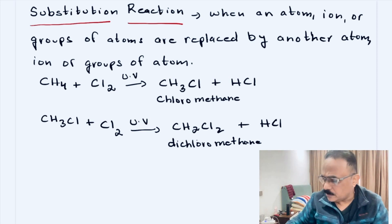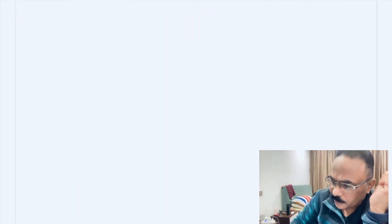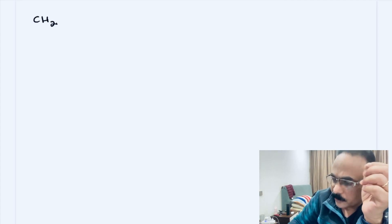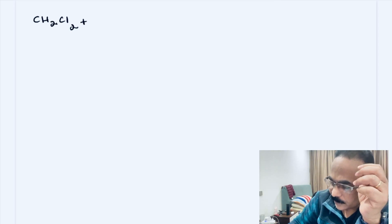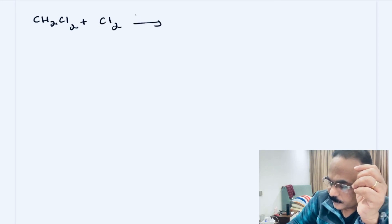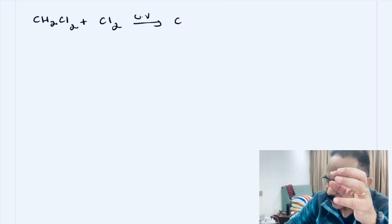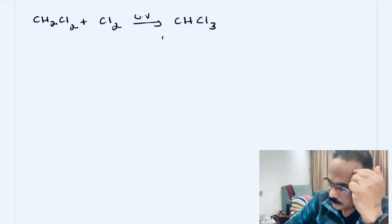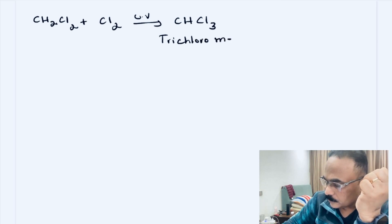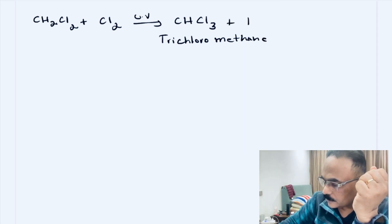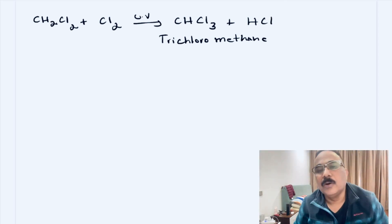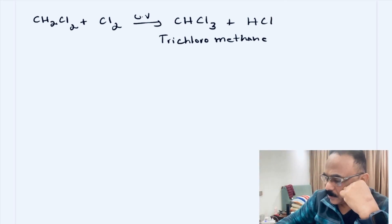Let us write the further equations. The third equation: we have dichloromethane, so CH2Cl2 plus Cl2 under UV gives CHCl3, which is trichloromethane, plus HCl. Trichloromethane is also known as chloroform.